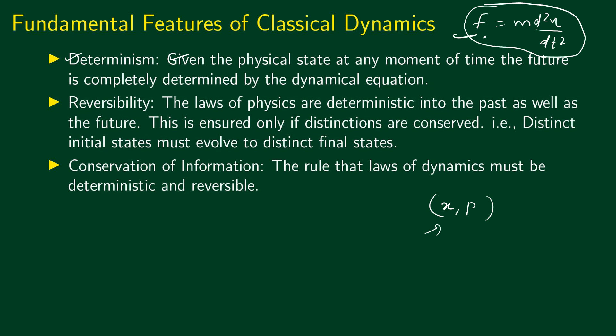The second important feature is reversibility. Reversibility means that the laws of physics are deterministic into the past as well as into the future. The laws of physics in classical mechanics do not distinguish between past and future. In our experience we see past and future differently, but the fundamental equations of motion in classical mechanics work the same way towards the future or towards the past.